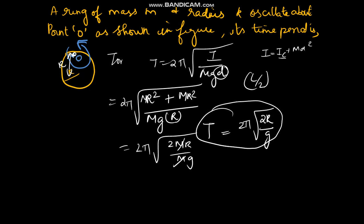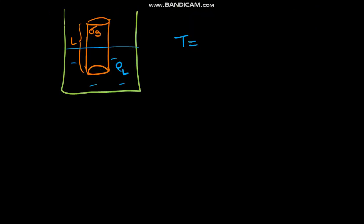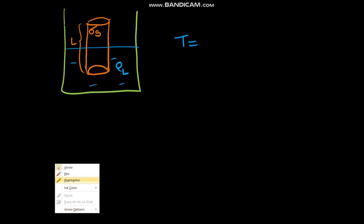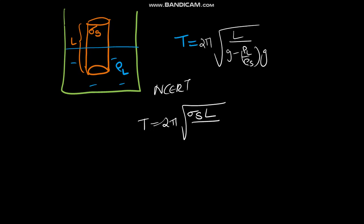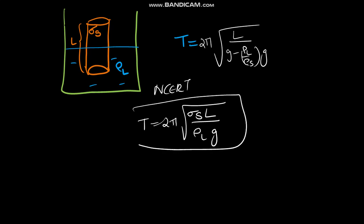For a rod hinged at a point, the moment of inertia is mL²/3, so T = 2π√(mL²/3 ÷ mg·L/2). Additionally, NCERT also provides an alternate buoyancy formula: T = 2π√(ρ_solid · L / (ρ_liquid · g)). This formula is given in the book-back question in NCERT and must be remembered for the NEET exam.